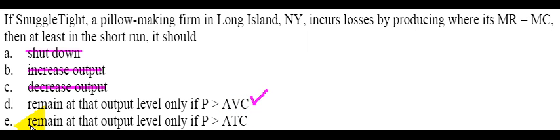The reason why E is not right is it says remain at that output level only if price is greater than ATC. But remember, in the short run, and that's the key phrase here in the question, the firm doesn't have to make necessarily a normal or an economic profit, but it does need to at least cover its operating expenses and make an operating profit, even if it's making an economic loss. So that's the reason why E is not a possible option.